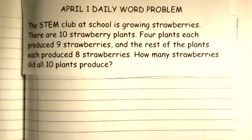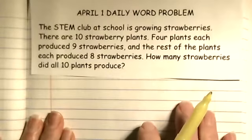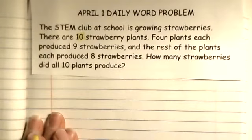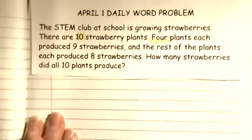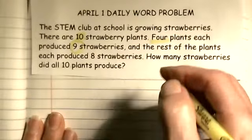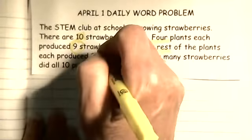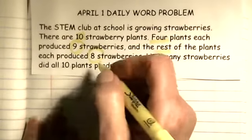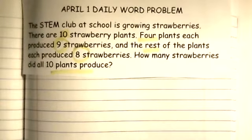Now, produce means that they grew them, okay, just in case that confused you. So, they're telling you that there are ten plants. Four of the ten produce nine strawberries, and the rest produced eight strawberries. How many strawberries did all ten plants produce? All right.